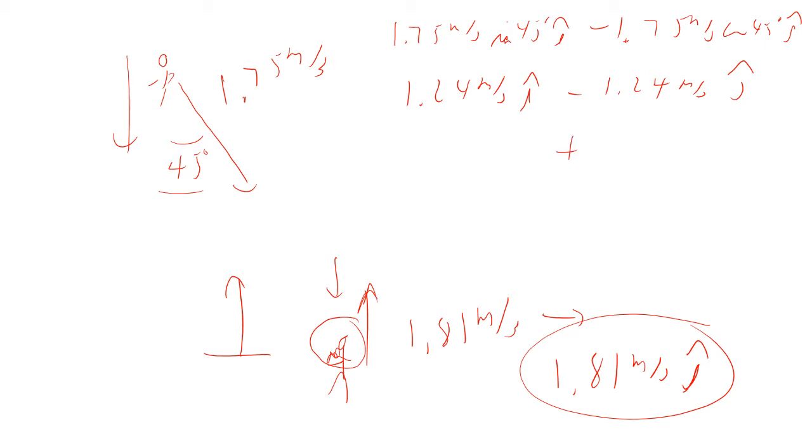So it's like an extra 1.81 meters per second in that direction. So the total relative velocity is going to be 1.24 meters per second i minus 3.05 meters per second j. So it looks like it's coming over this way, and then down that way.